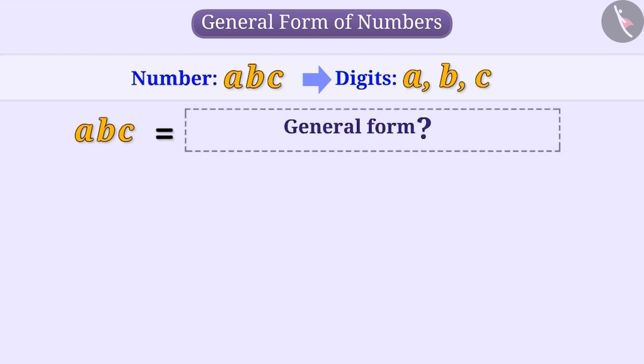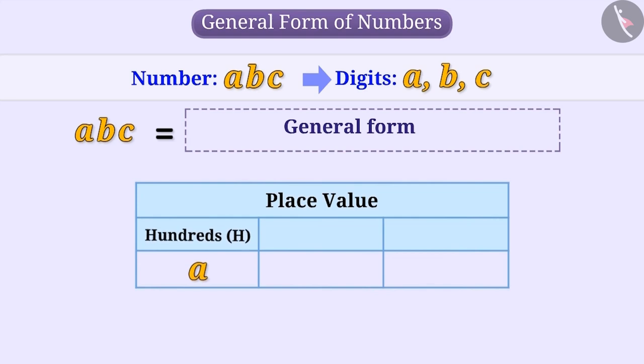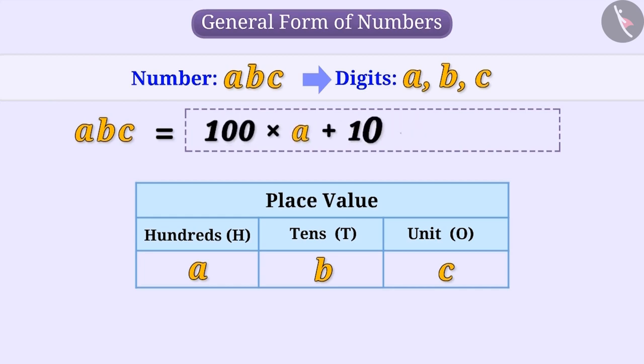Think for a while. Absolutely correct. Here, A is the digit in the hundreds place, B in the tens place and C is in the units place. So, we will write ABC in its general form as 100 × A + 10 × B + 1 × C.